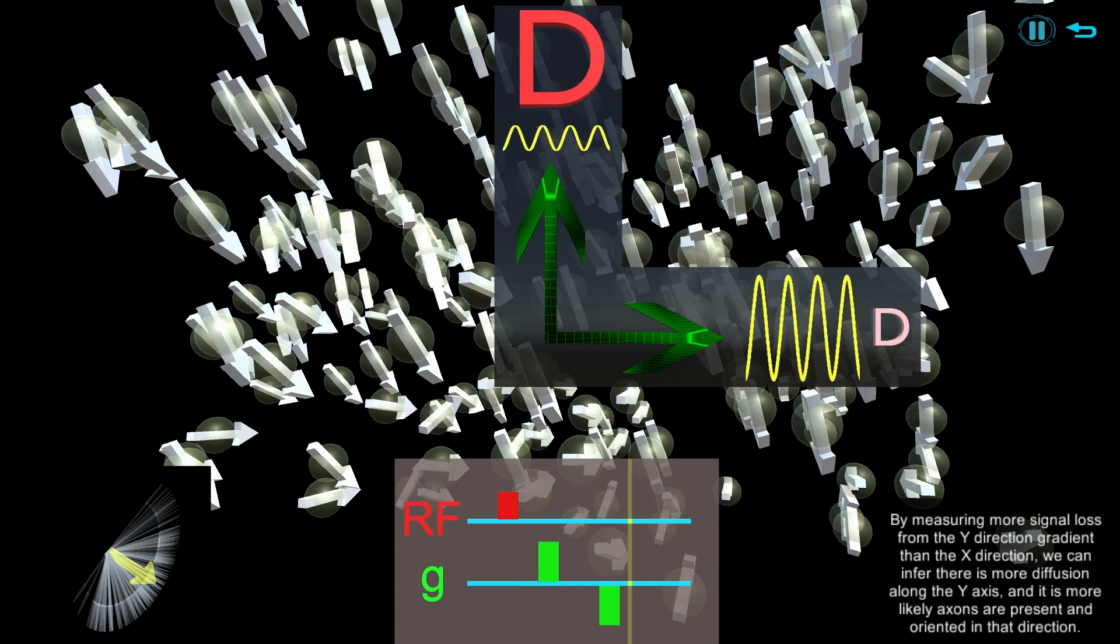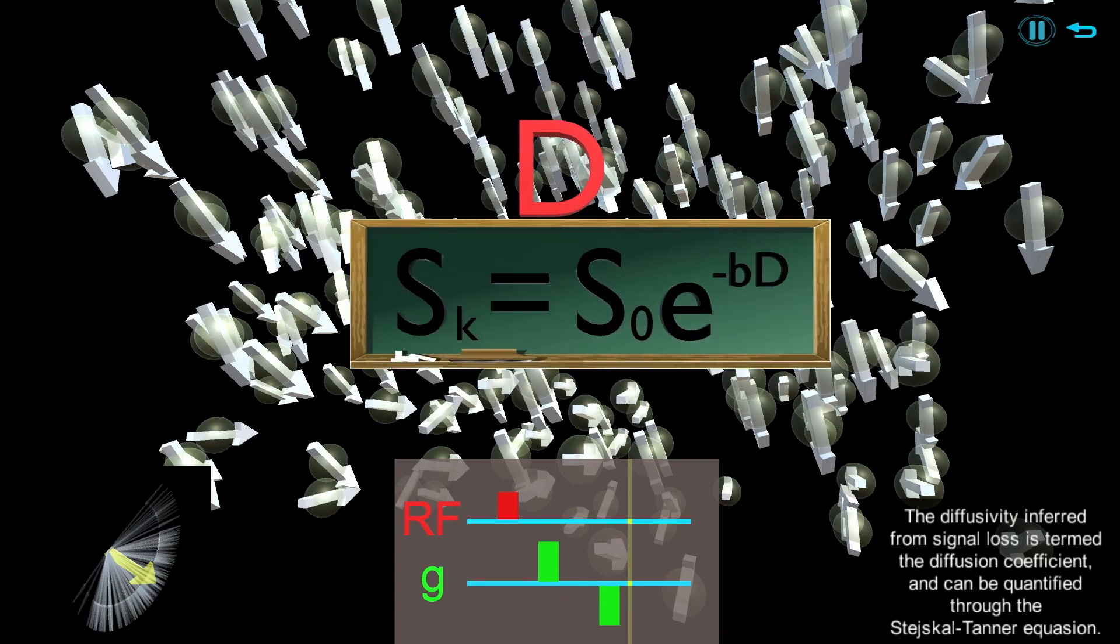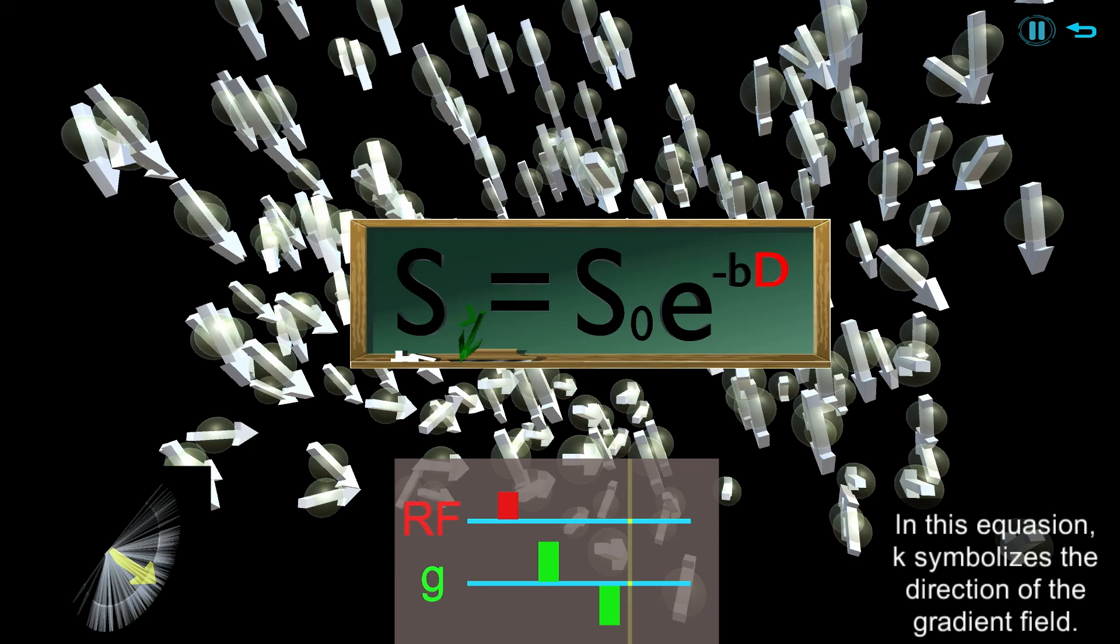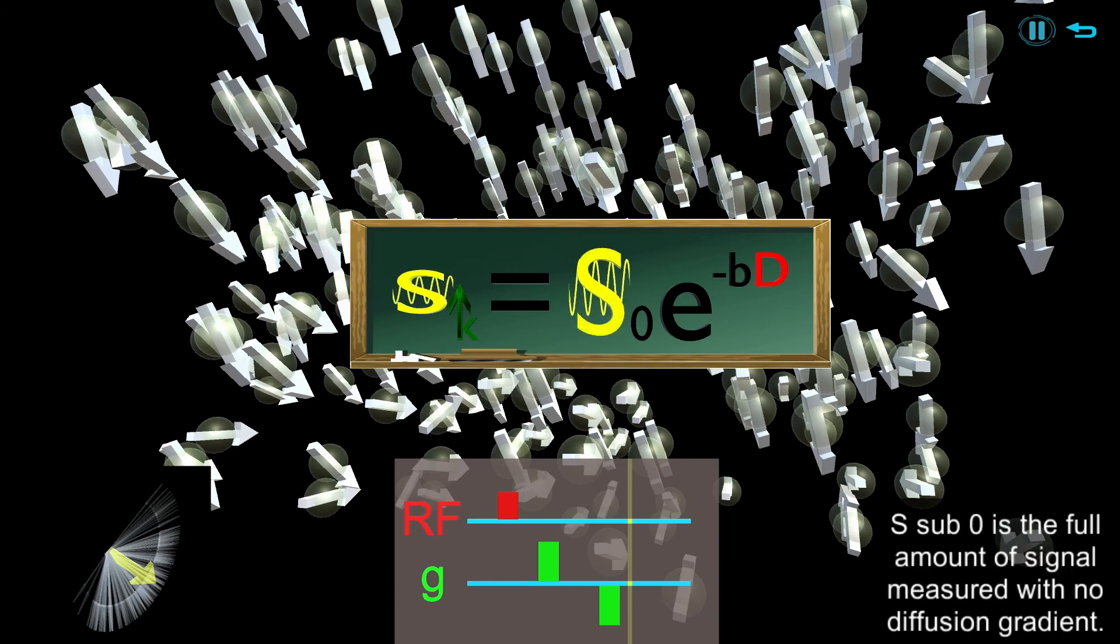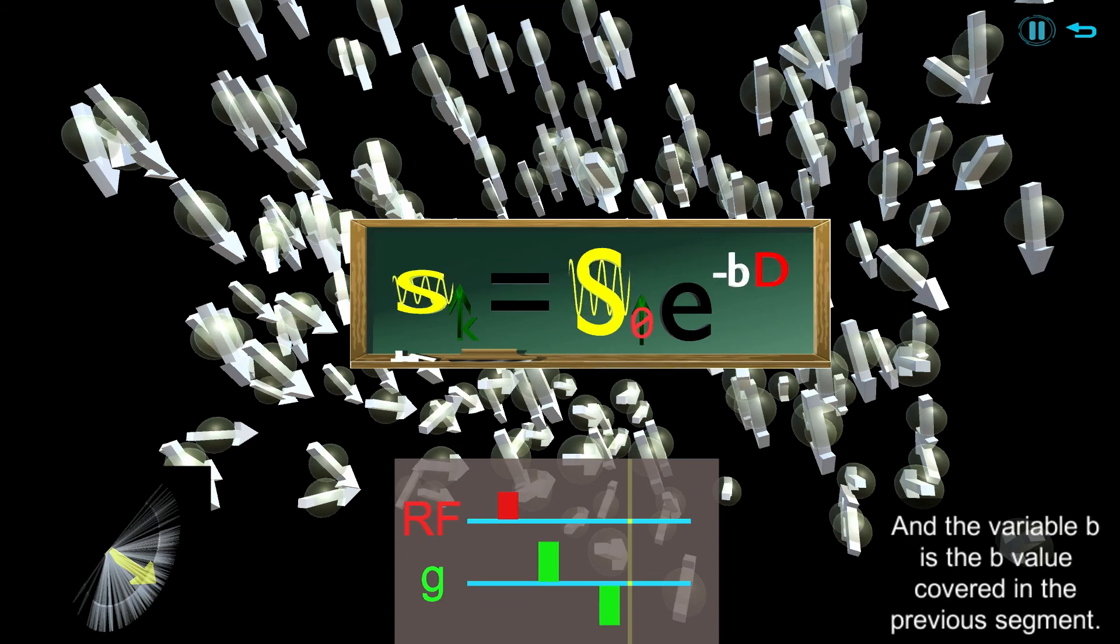The diffusivity inferred from signal loss is termed the diffusion coefficient and can be quantified through the Stejskal-Tanner equation. In this equation, k symbolizes the direction of the gradient field. S sub k is the amount of signal measured after the dephasing and rephasing gradient in direction k. S sub 0 is the full amount of signal measured with no diffusion gradient, and the variable b is the b-value covered in the previous segment.